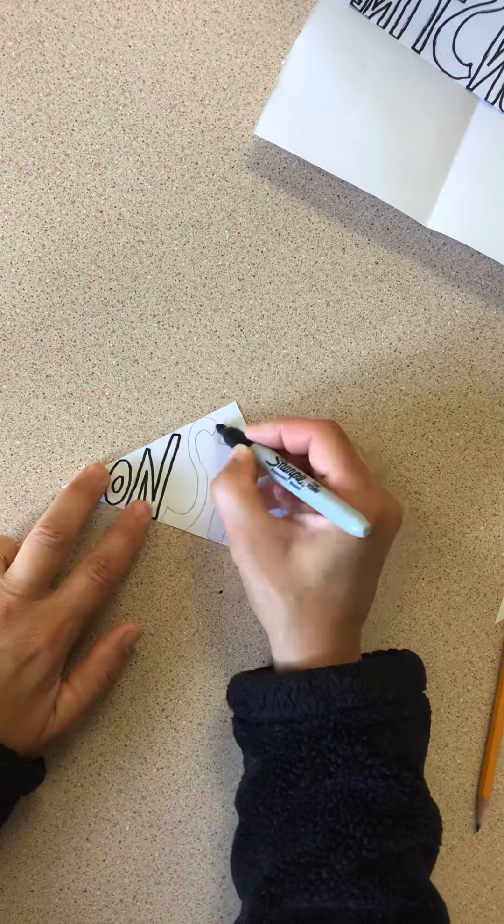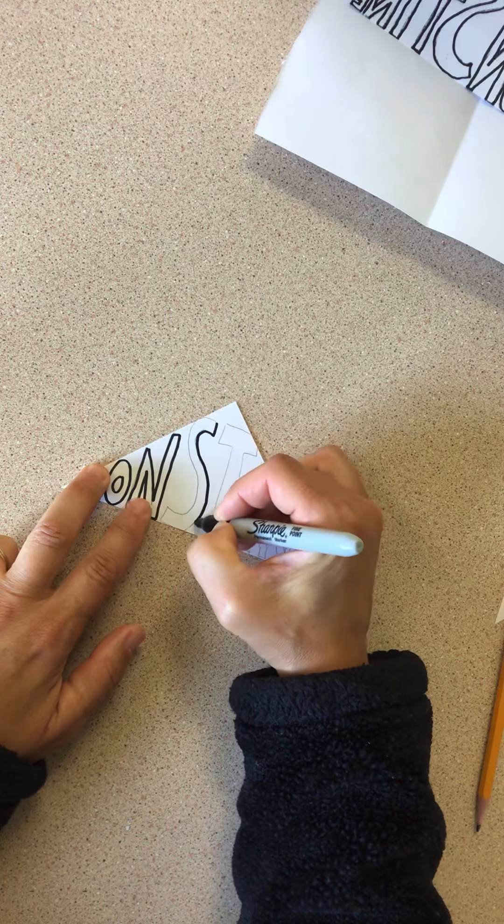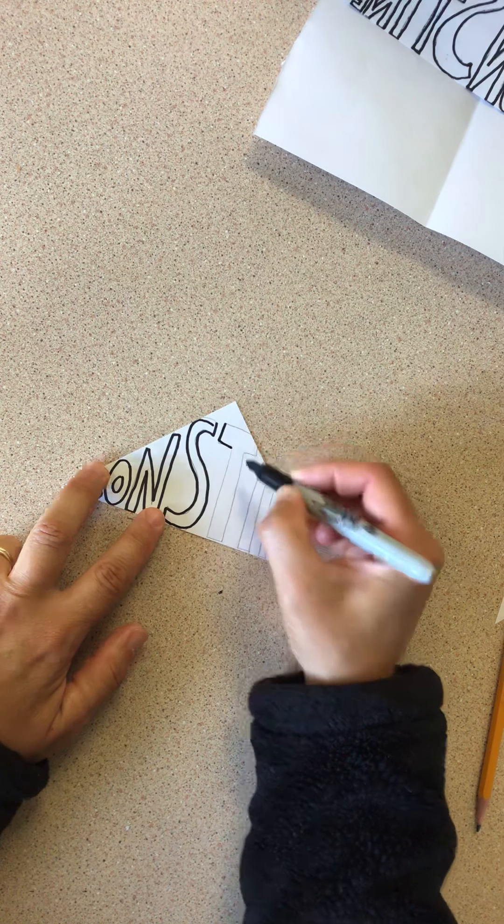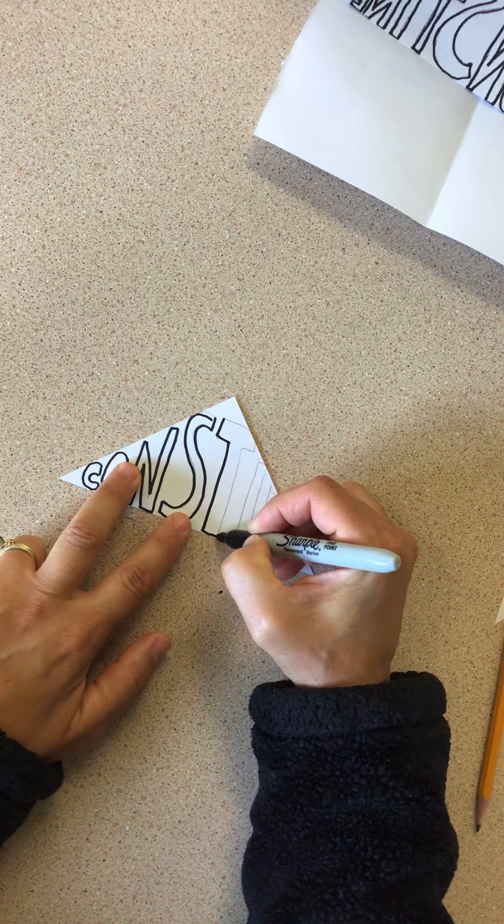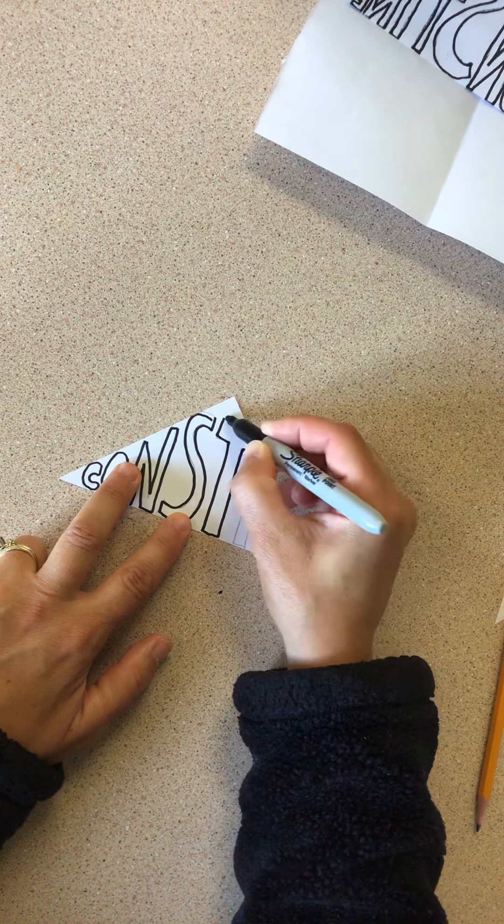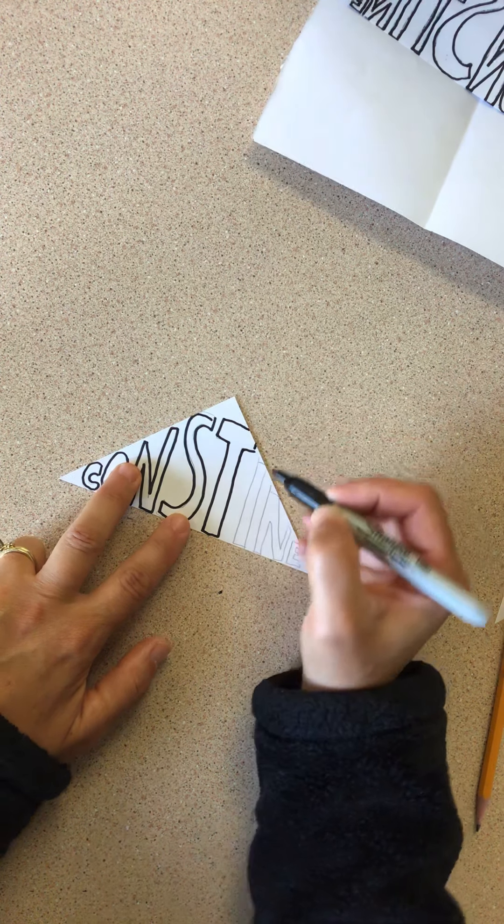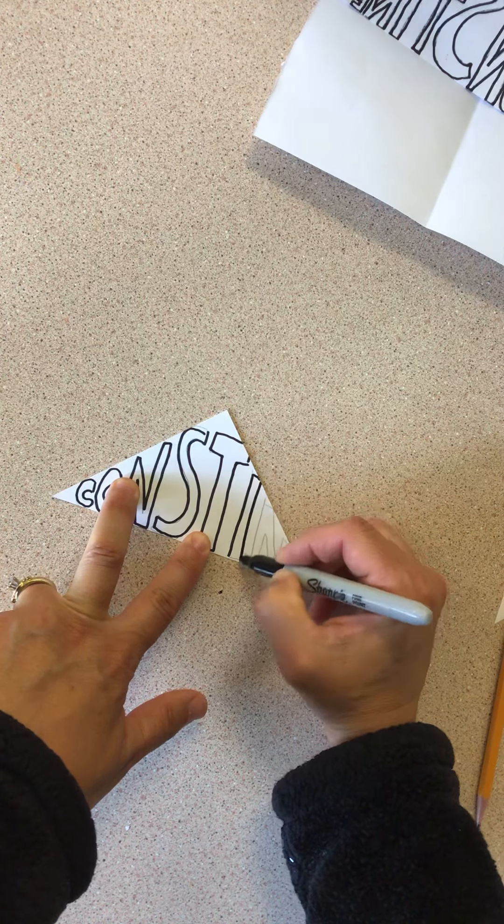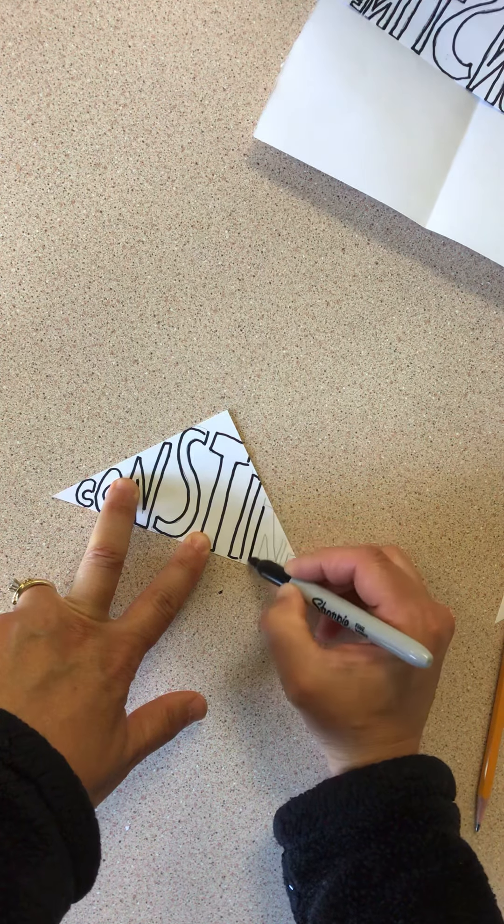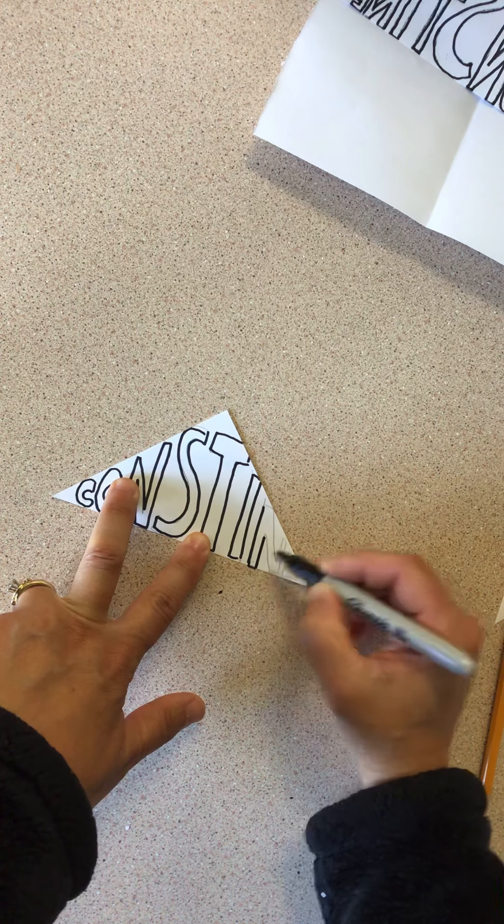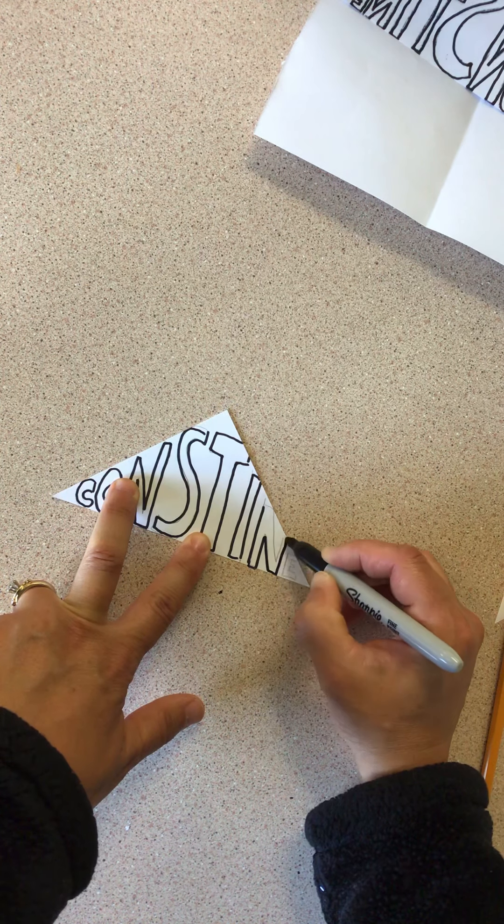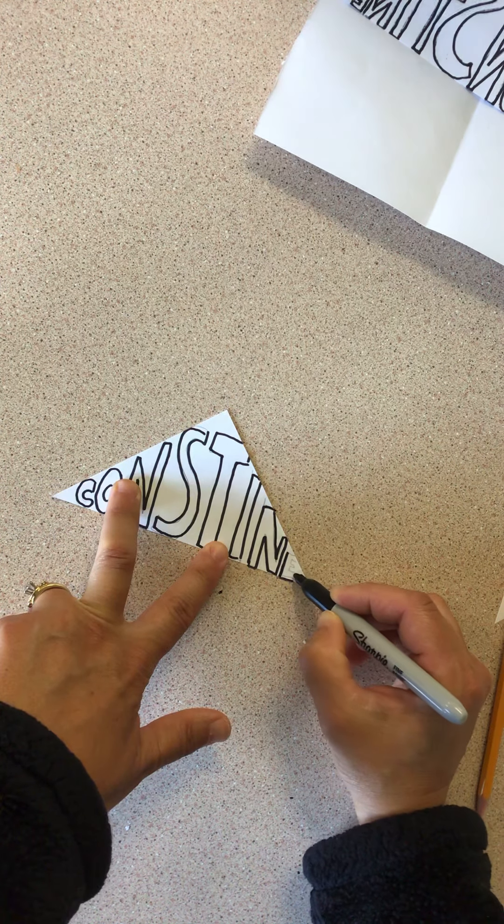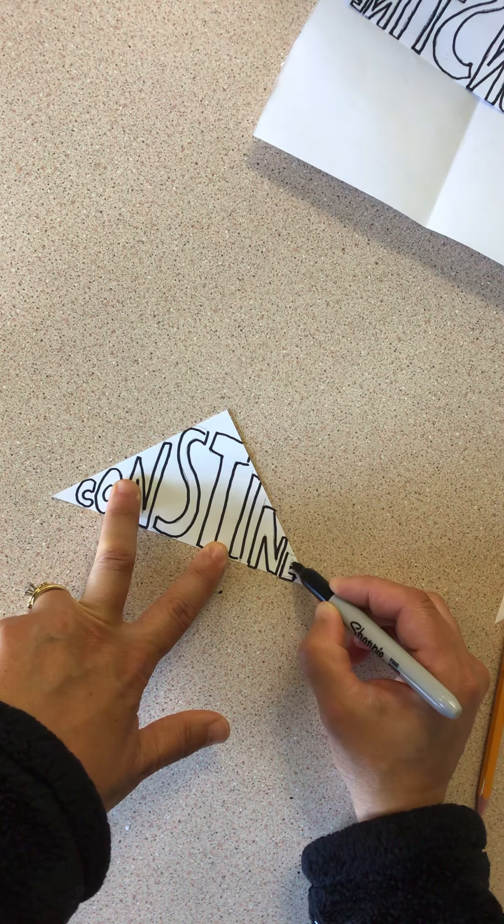If you want to make a pattern inside your letters, you're welcome to do that or outside of your letters. It just might get a little busy. If you have a really long name like mine, I might actually just leave mine plain and color these in with solid color. I haven't decided quite yet, but it's something I'm going to be thinking about because I just don't want it to get too busy and then you can't read it.